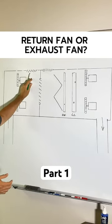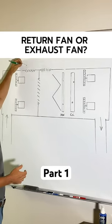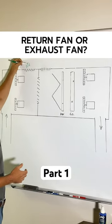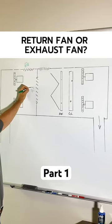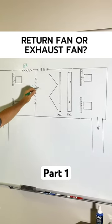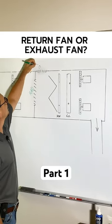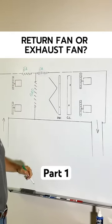This would be your exhaust air section. So we'll go ahead and put an exhaust air here. This would be your return air damper. We'll call that a RAD and this would be your outdoor air damper here.